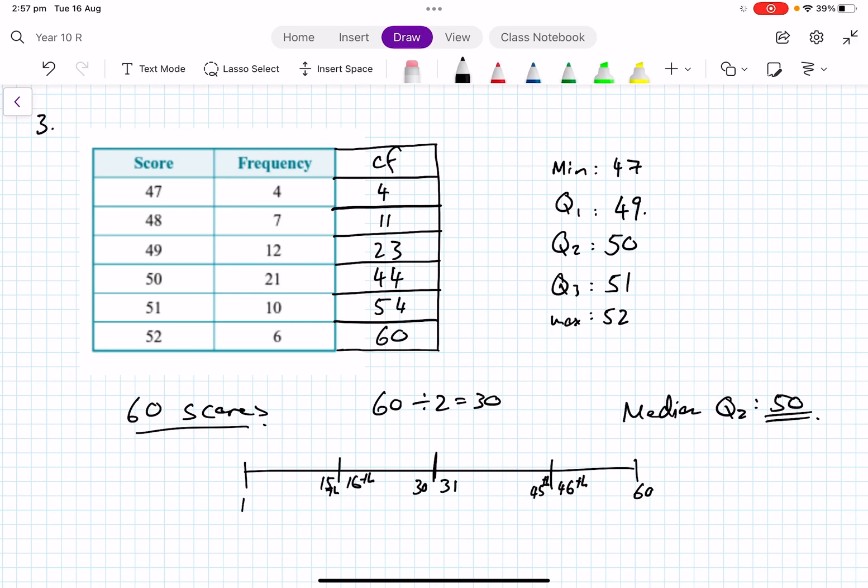That's not going to be a particularly interesting box plot, but we're going to have the data. So we see how we use the cumulative frequency, thinking about the total number of scores, like I've done here, and we break it into parts. And we think, okay, let's cut it in half. That's the 30th score. That's the 31st score. 45th, 46th. That's the 60th score. That's the first score. And what are the scores? Well, they're the actual scores as listed there.